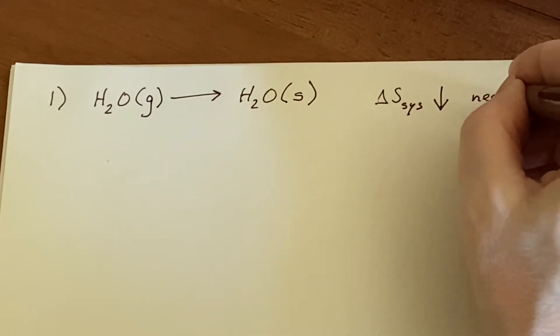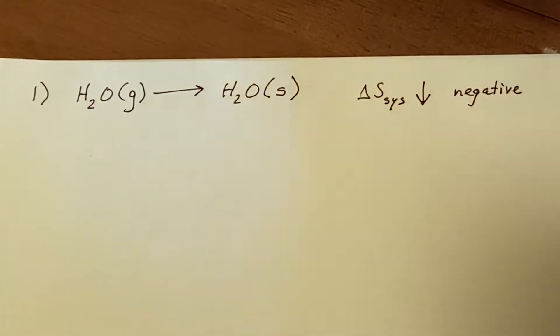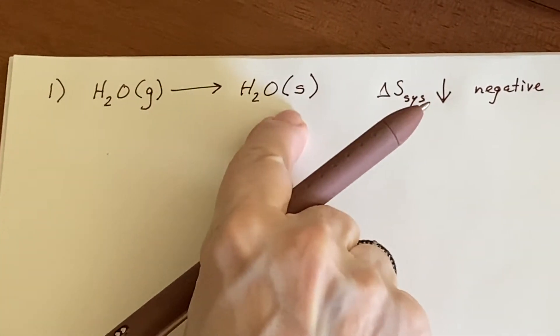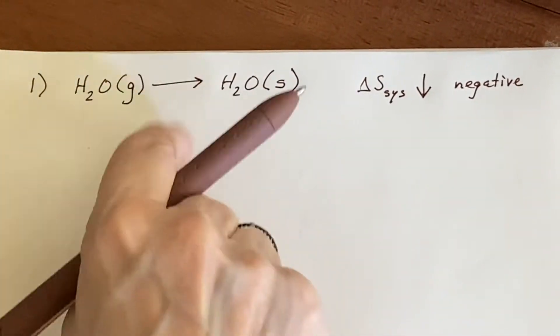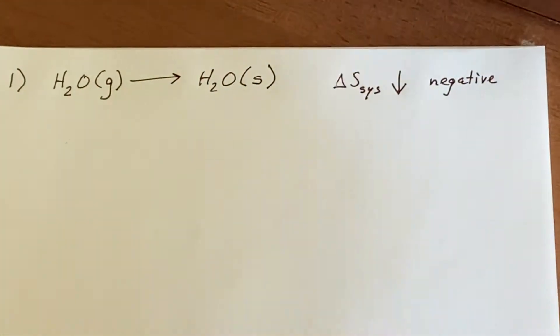It would have to be negative for Delta S because products minus reactants, that has less. This has more. I'm subtracting more from less. I've got a negative sign.